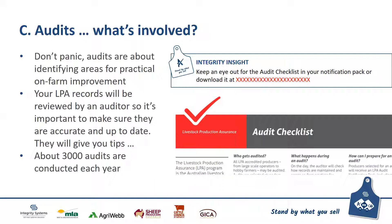If an issue is identified at an audit it's called a non-conformance, identified through minor, major or critical categories. A minor non-conformance is recorded as an observation — for example, an improvement to record keeping. A major non-conformance is recorded as a corrective action request, requiring the producer to make a change on farm within a certain time period. A critical non-conformance is a serious issue that puts food safety at risk — such as animals being fed restricted animal material, a residue detection above an MRL, or stock found chewing or licking an old battery — and your LPA accreditation may be suspended until the issue is addressed.